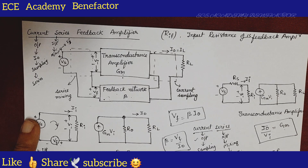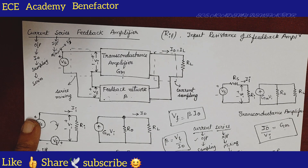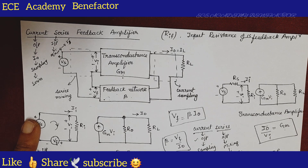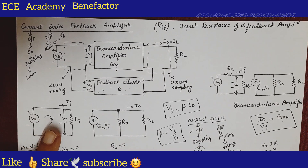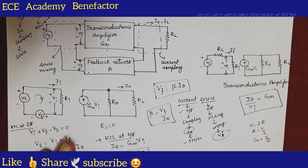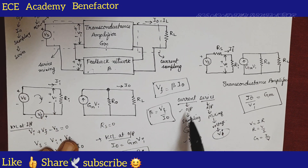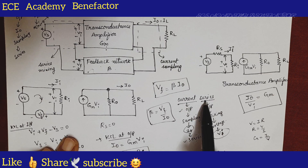The Rif equation came to be Ri times of (1 + β·gm). If you are asked to derive the ROF equation, you need to first draw all the block diagrams and then do the derivation. So I am quickly revising the block diagram once again based on the name 'current series'.